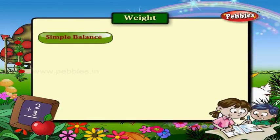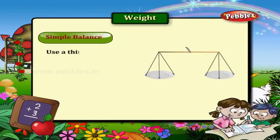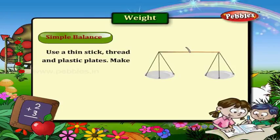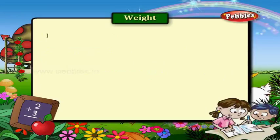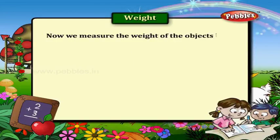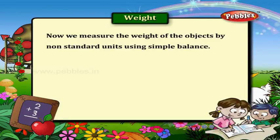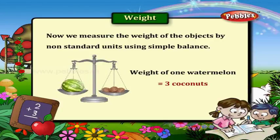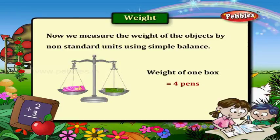Simple balance. Use a thin stick, thread, and plastic plates to make a simple balance, as shown here. Now we measure the weight of objects by non-standard units using a simple balance. Weight of one watermelon is equal to three coconuts. Weight of one box is equal to four pens.